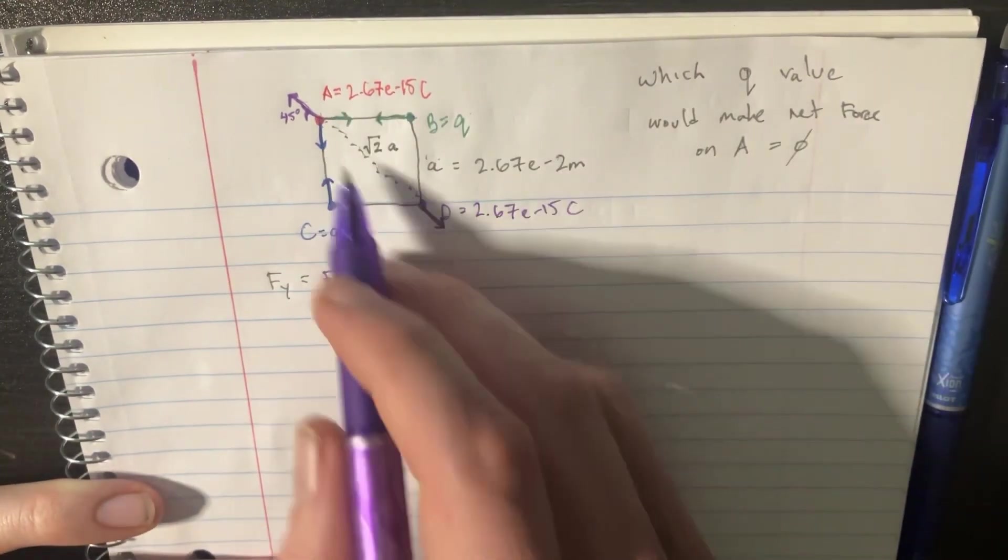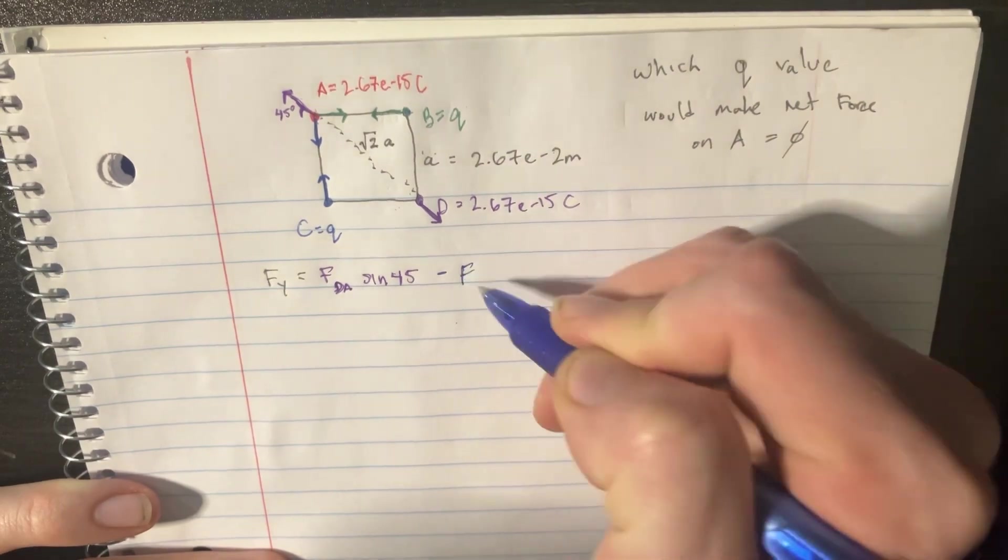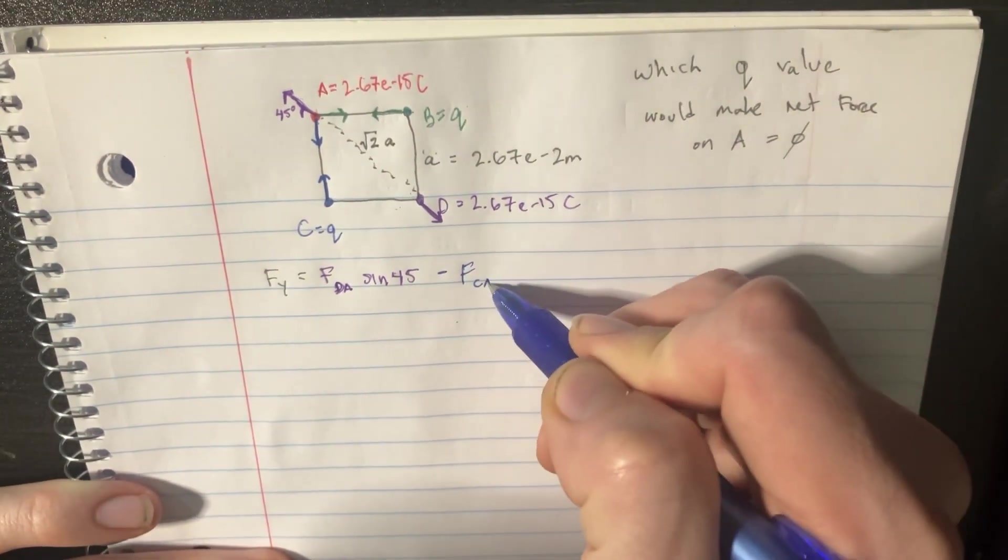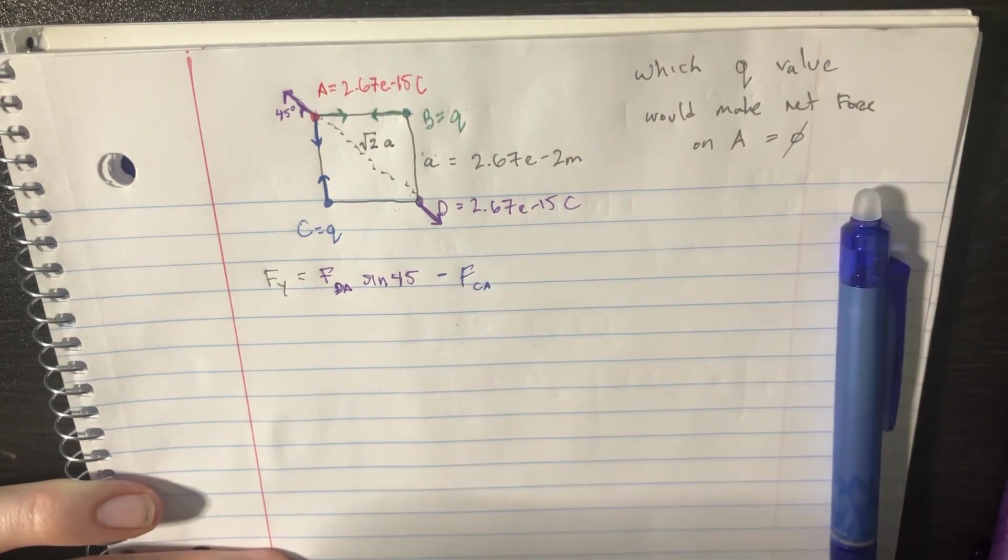And then we're going to have to subtract the blue. So minus the force of C on A. And that's pretty nice. That's the Fy direction.